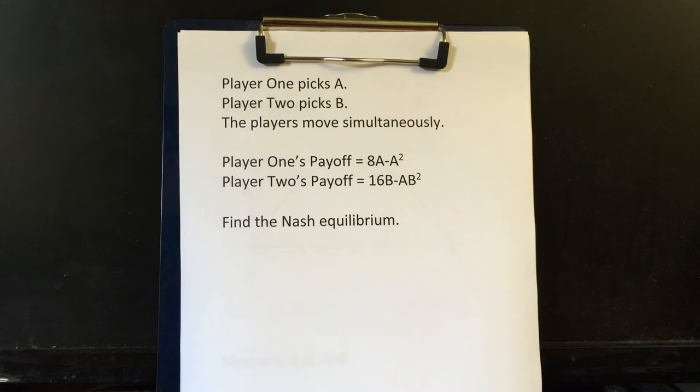If you were playing this game with someone else, both of you would read the sheet. You'd see the other person's payoff. Then you would each write down the value. Player one would write down A, player two would write down B, and then you would reveal.